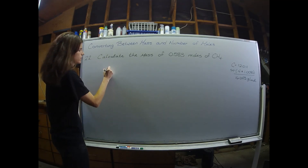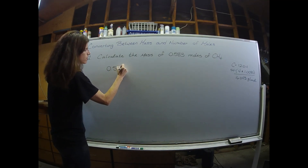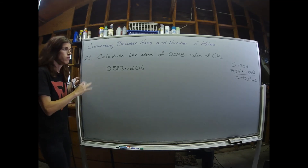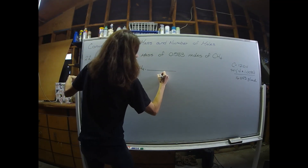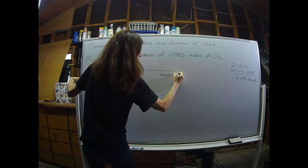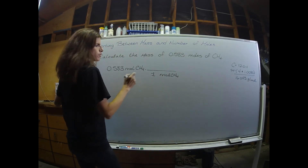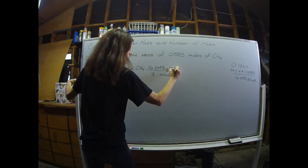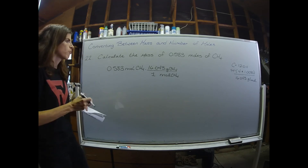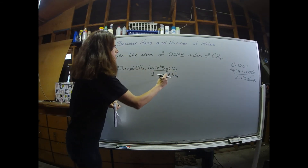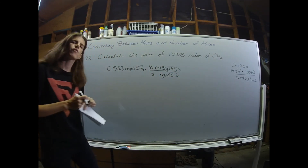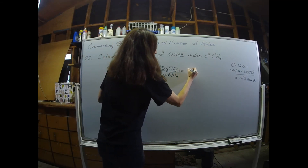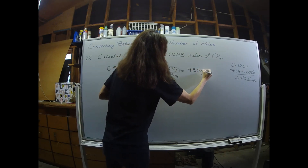Let's start with what they gave us — 0.583 moles of CH₄. We want to get rid of moles of CH₄ and change that into grams. We calculated the molar mass earlier — 16.043 grams per mole. Moles of CH₄ cancel moles of CH₄, leaving us with grams of CH₄. That's perfect because they want us to calculate mass. Multiplying across, the answer is 9.35 grams of CH₄.